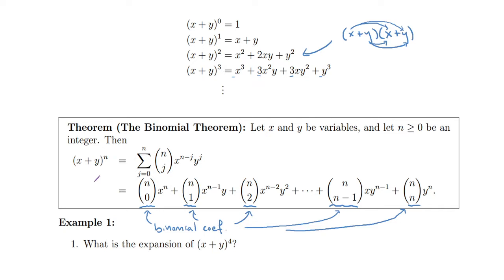Now, the last time we did have a definition for these combinations — binomial coefficients in terms of factorials. For example, n choose two was n factorial divided by two factorial times n minus two factorial. That still applies here. If n isn't too big, you might want to use Pascal's triangle, but if n is rather large, you'd want to go back to the factorial definition. Notice the power of x starts at x to the n, then x to the n minus one, x to the n minus two, and so on until x to the zero. The y terms increase by one each time: y to the zero, y to the one, y squared, all the way to y to the n.